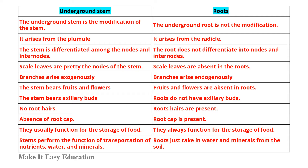Branches of stems arise exogenously, while branches of roots arise endogenously. The stem bears fruits and flowers, whereas fruits and flowers are absent in roots. The stem bears axillary buds, but roots do not have axillary buds. Root hairs are absent in stems but present in roots. Root cap is absent in stems but present in roots. Underground stems usually function for the storage of food, while roots always function for storage of food. Stems also perform transportation of nutrients, water, and minerals, while roots take in water and minerals from the soil.